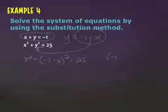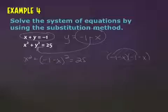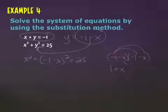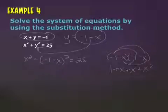If I expand that negative one minus x times negative one minus x and FOIL it: First is one. Outer is positive x. Inner is positive x. Last is positive x squared.